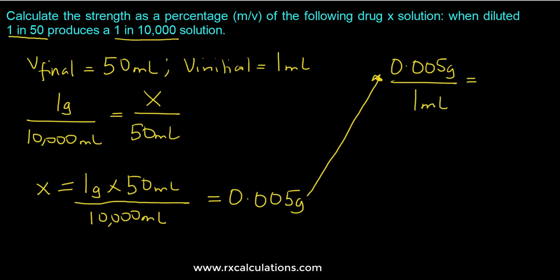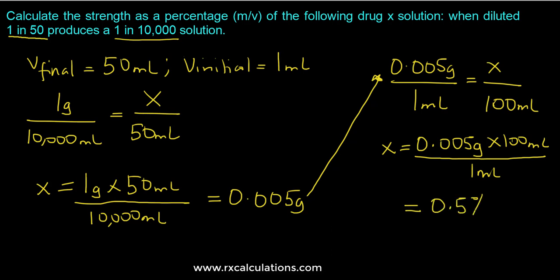And so as a percentage strength we want to figure out how much is in 100 ml. So percentage strength is out of 100 milliliters. So we can solve for the new variable which would be 0.005 grams times 100 divided by 1 ml and so your percentage strength is going to be 0.005 percent. Okay so that's how you do this question.